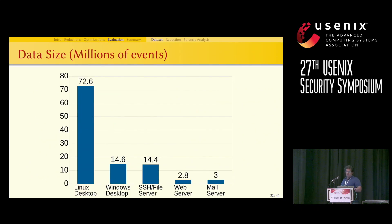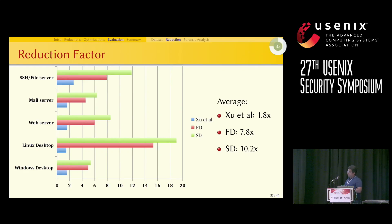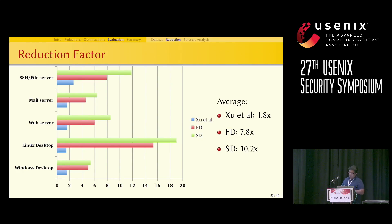Here are the event counts for each dataset — for example, the Linux system had 73 million events and our web servers had 14.4 million events. Using our reduction techniques, we achieve significant reductions across all datasets. We also implemented Shu et al.'s algorithm for comparison, and our full dependence and source dependence performed much better, as they leverage global context.